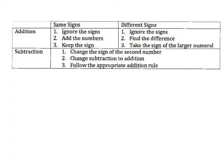Here are our integer rules. Integers are positive and negative numbers. If you're doing addition and the numbers have the same signs — so they're both positive or they're both negative — you're going to ignore the signs, add the numbers, and then keep the sign. So if they're both positive, you add them and your answer is positive. If they're both negative, you add them and your answer is negative.